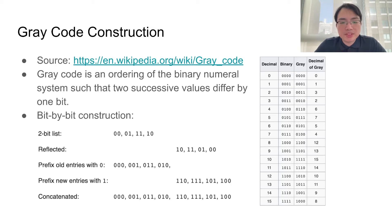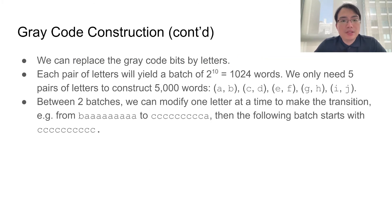You can verify that the resulting eight strings are valid gray code of length 3. So, we can repeat this process until we have gray code of length 10. To make gray code construction work for our problem, we will simply replace the bits by letters. We will only need five pairs of letters to construct 5,000 words, up to letters i and j.